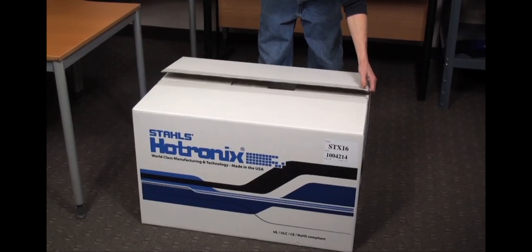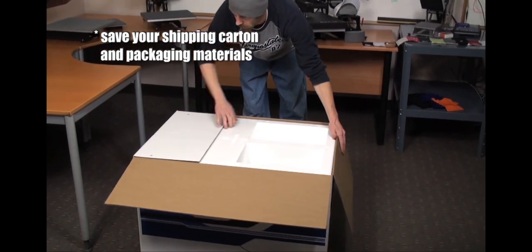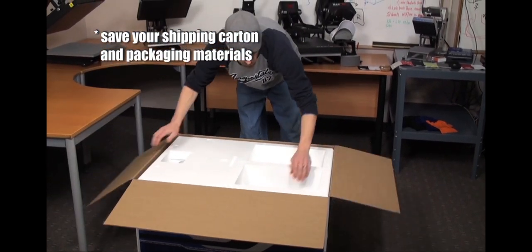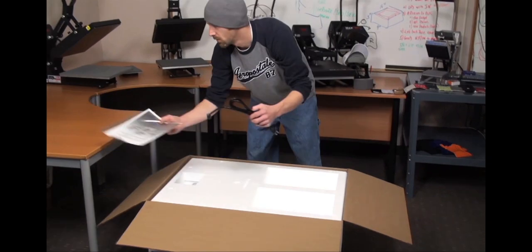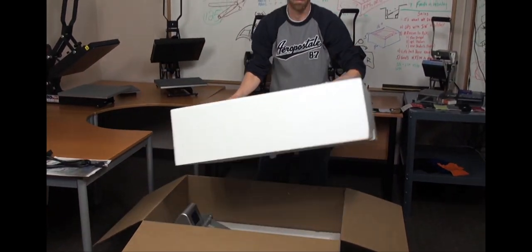Once you have received your Hotronix Clam series heat press, carefully open the shipping carton and remove your warranty information and power cord. Go ahead and lift out the form-fitting styrofoam packing material and set it aside.